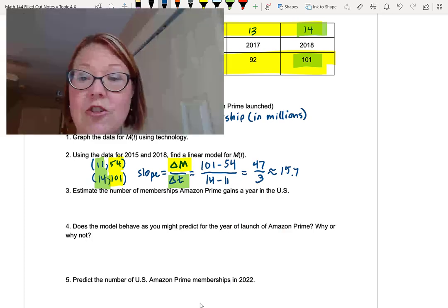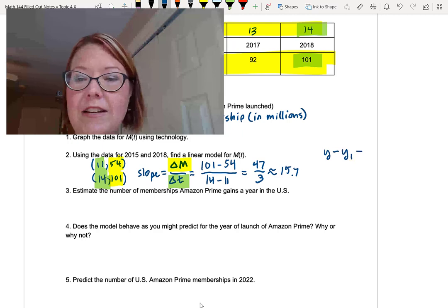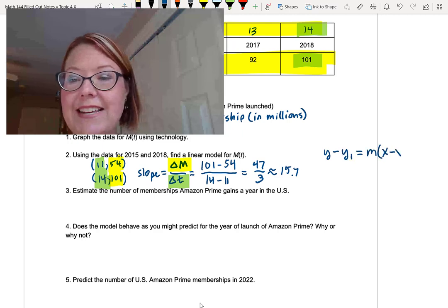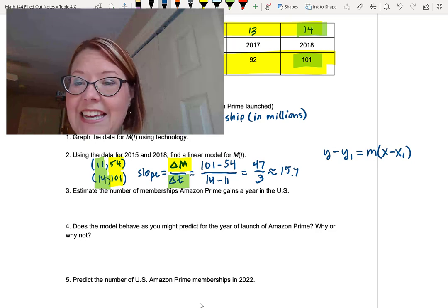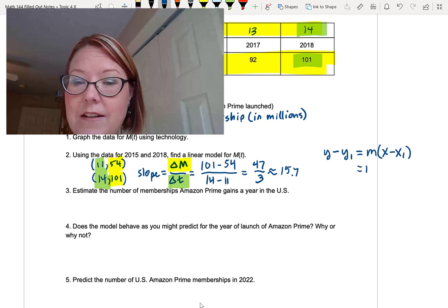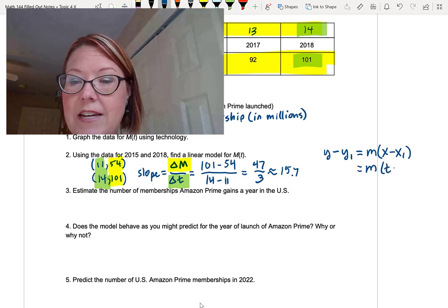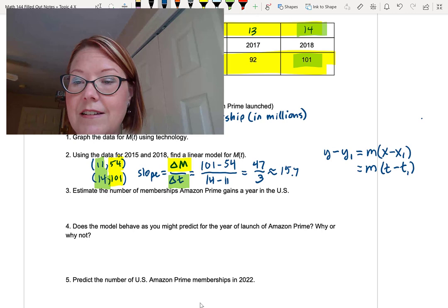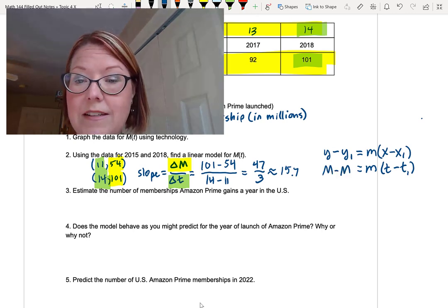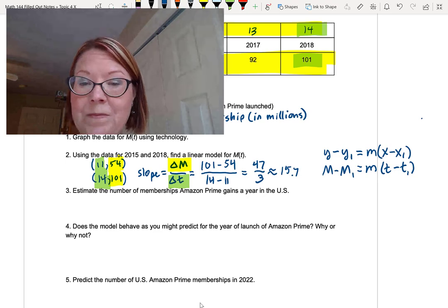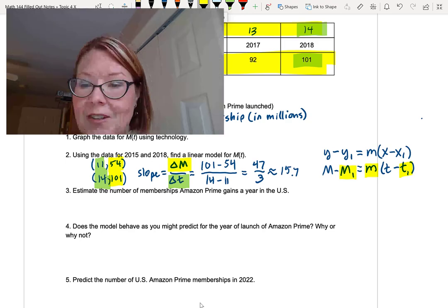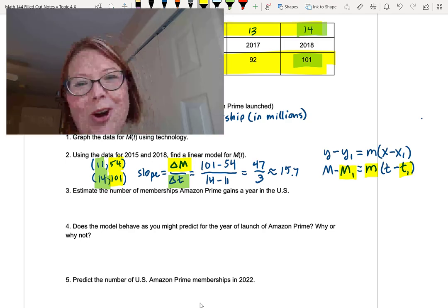Now usually we write Y minus Y1 equals M times X minus X1. In this case, we've got slightly different variables. Instead of X minus X1, we have T minus T1. And instead of Y minus Y1, we have M minus M1. All right, let's put our data in to the T1, and the slope, which is lowercase m, not capital M.